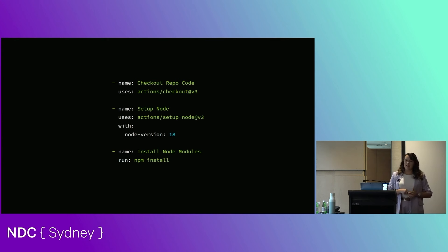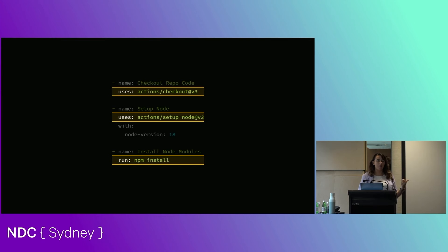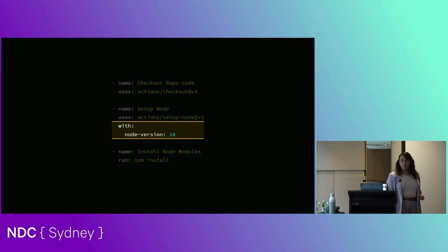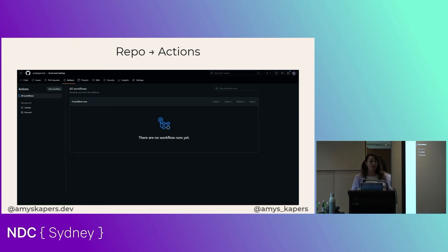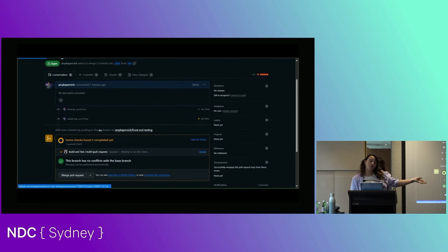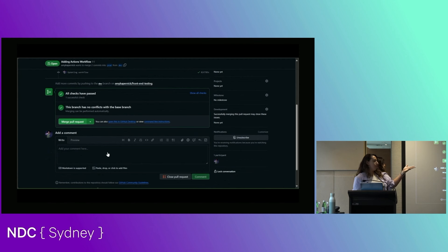For now we're just going to have three steps to get started. Each step has a name. We're going to check out the repo code, then set up Node, then install Node modules. We use the checkout action to check out our repo code, the setup-node action, and then run npm install. Setup Node requires us to tell it which version of Node we want to use. When we have workflow files as part of our repo, we can find them in the GitHub dashboard under the Actions tab. When I open a PR to merge code into my production branch, it will now trigger my Actions workflow to run — checking out the code, setting up Node, and installing Node modules.